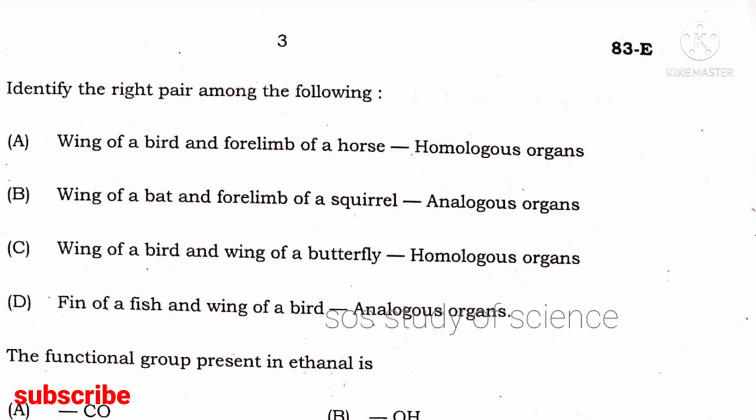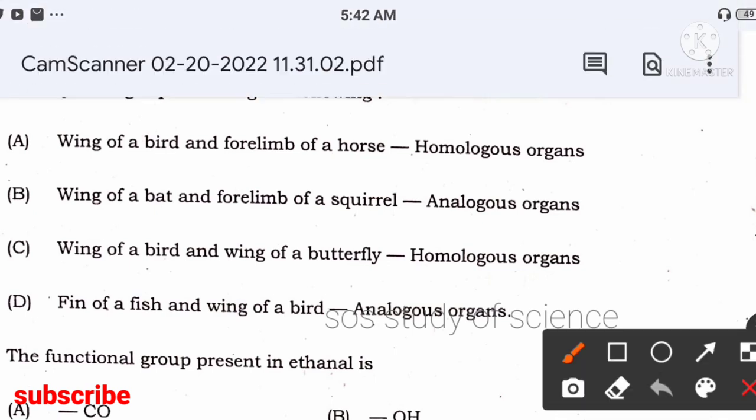Next: identify the right pair among the following — wing of bird and forelimb of horse; wing of bat and forelimb of squirrel; wing of bird and wing of butterfly; fins of fish and wing of a bird. You have to identify whether any two are homologous or analogous organs.